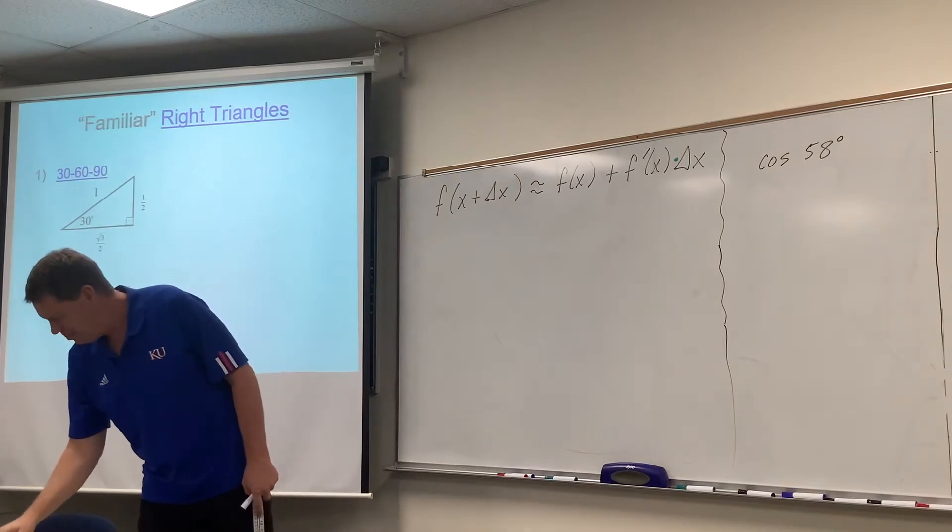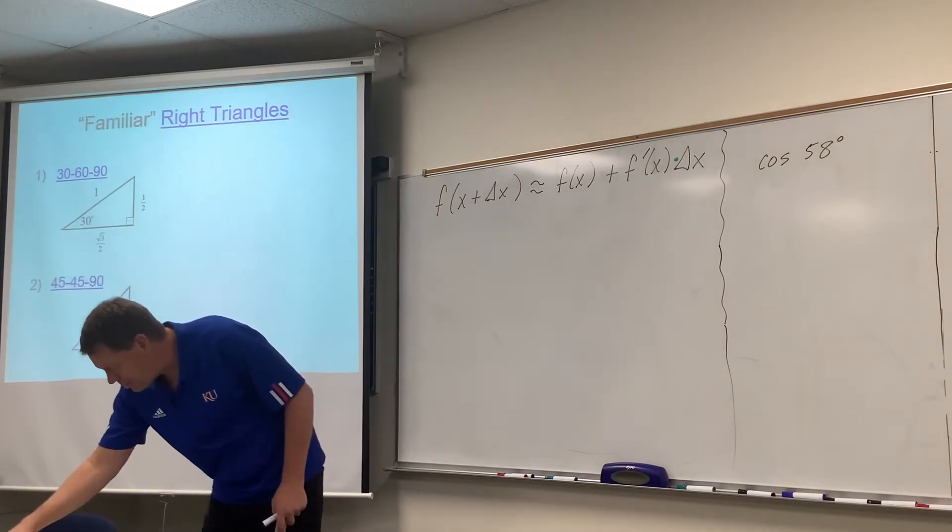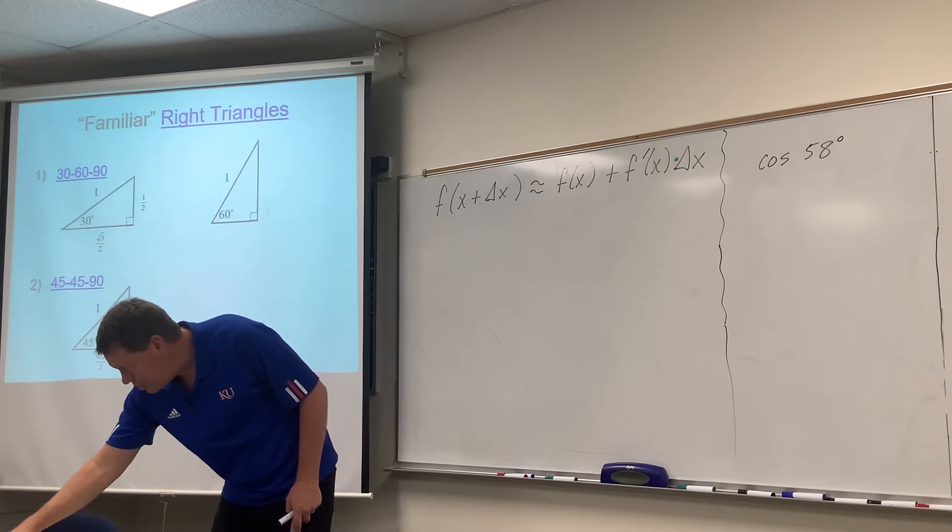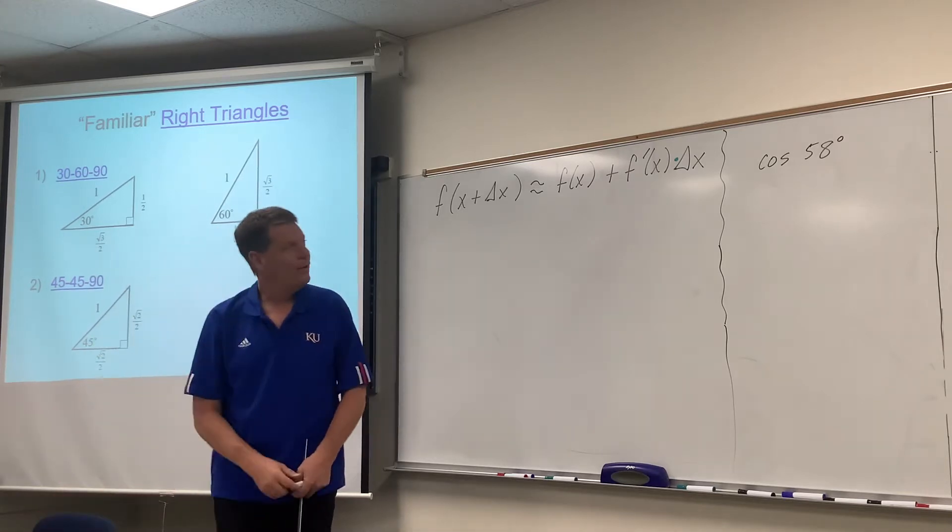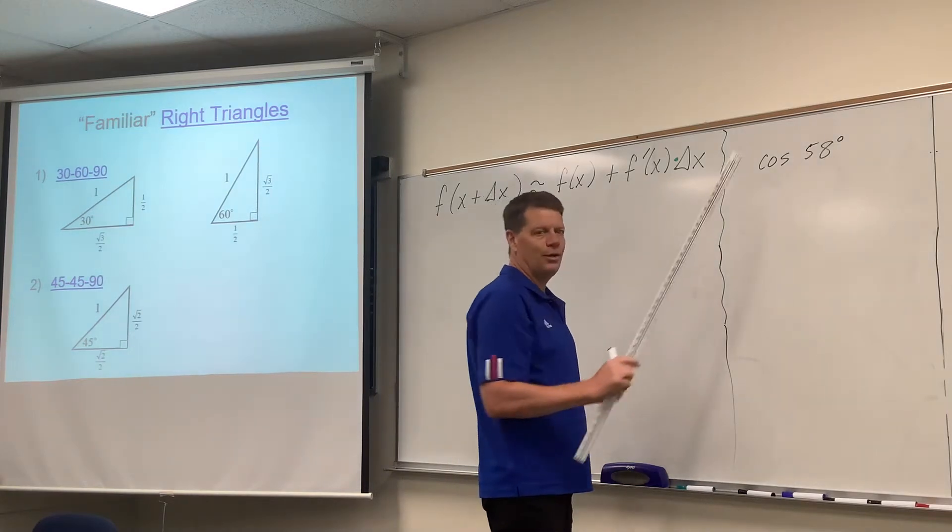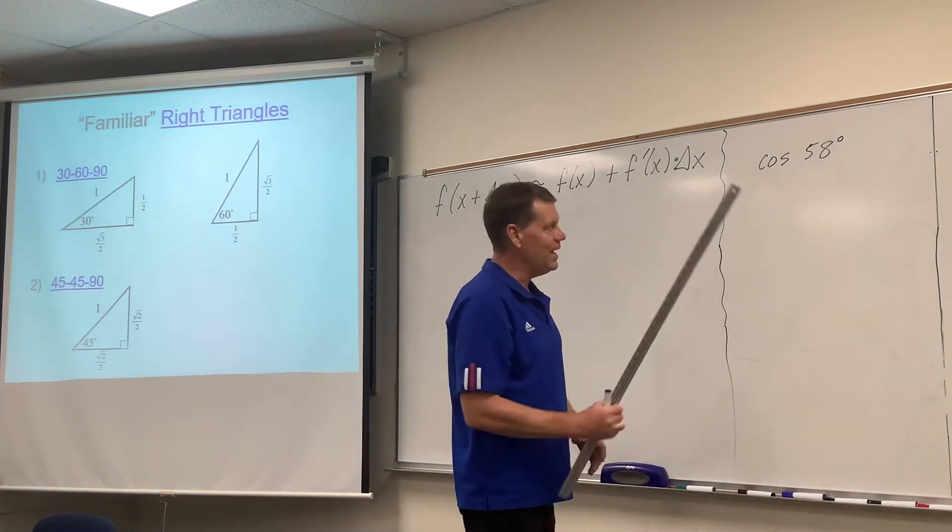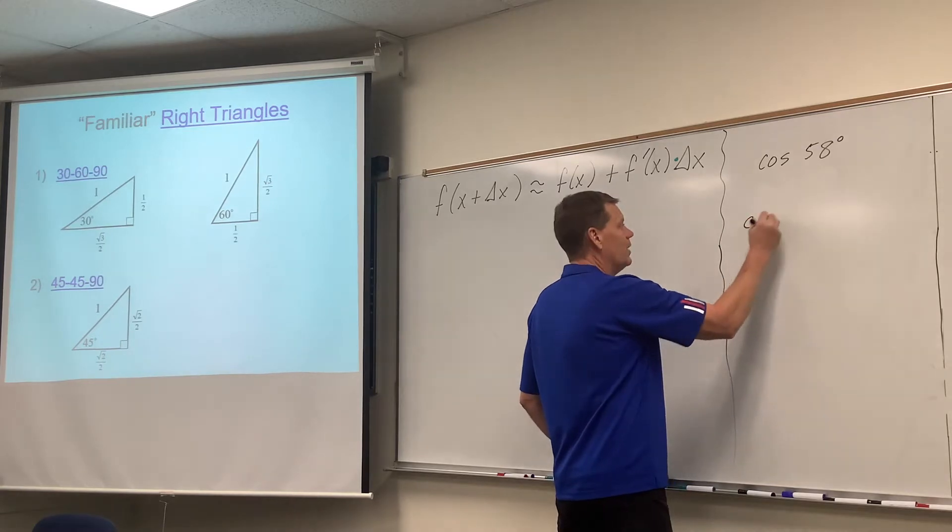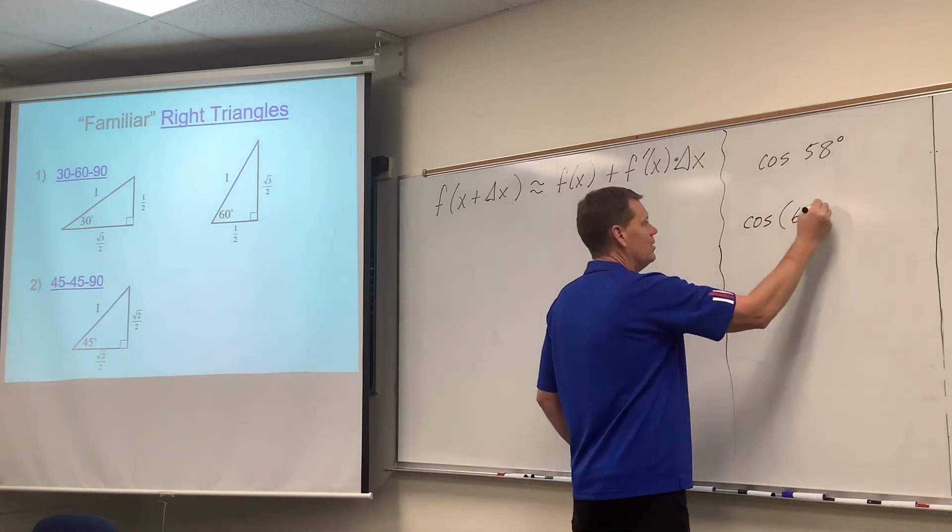But here's the deal. The best choice to get the best approximation possible would be to use the 60 degree for x because 60 is the closest familiar angle to 58. So indeed, what we could do is we could call this 60 degrees plus...